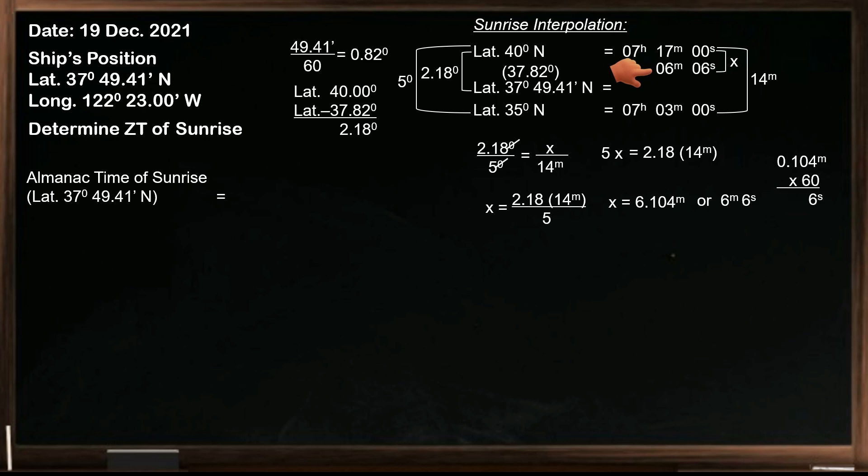So this is now the value of our x. We need to determine whether we will subtract or add it. Looking at the time of sunrise at latitude 40 degrees, going down to latitude 35 degrees north, the time of sunrise is decreasing, so our unknown will be subtracted. The sunrise in latitude 37.82 degrees is 07 hours 10 minutes 54 seconds.